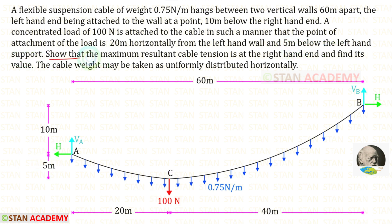Show that the maximum resultant cable tension is at the right hand end and find its value. The cable weight may be taken as uniformly distributed horizontally.